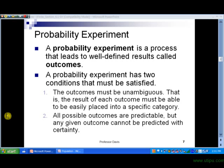And then the second condition is that all the possible outcomes have to be predictable, but on any given trial, the outcome cannot be predicted with certainty. In other words, there has to be somewhat of an element of uncertainty about it for an experiment to be a probability experiment. All right, well, let's take a look at an example and see if we can classify experiments as probability experiments here.